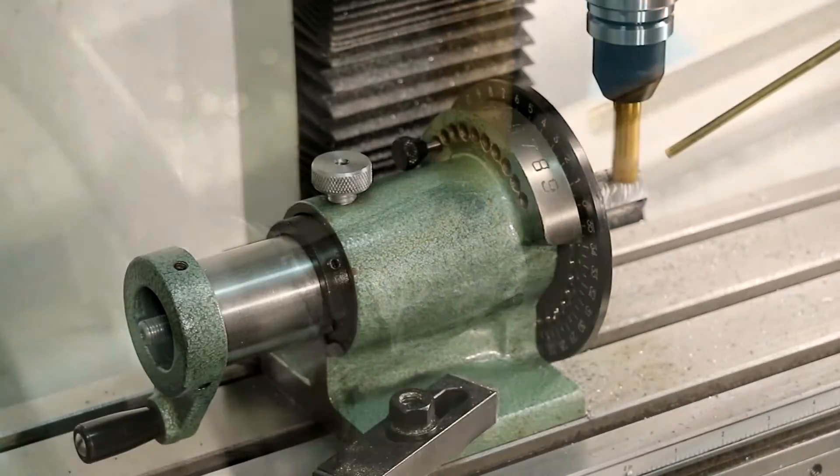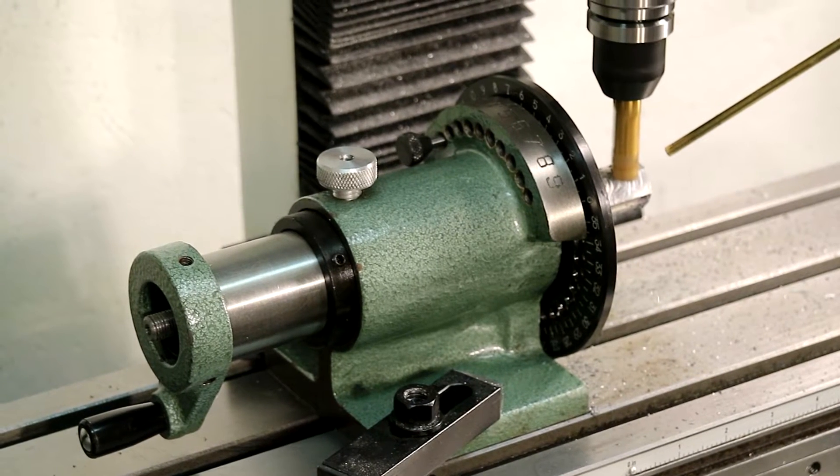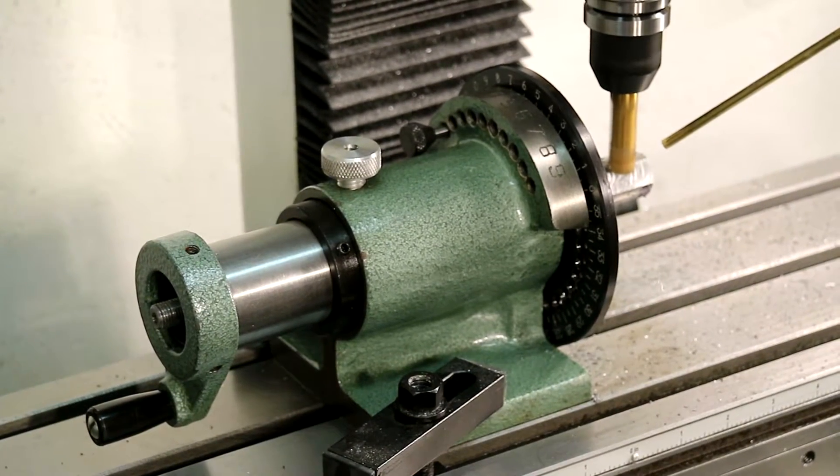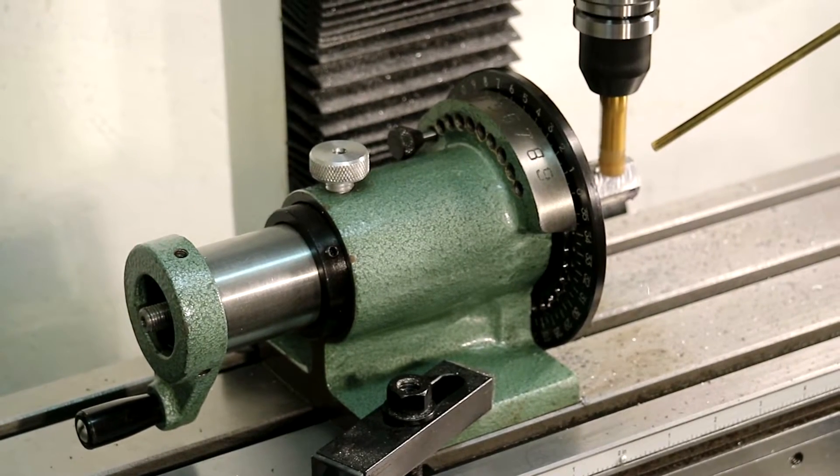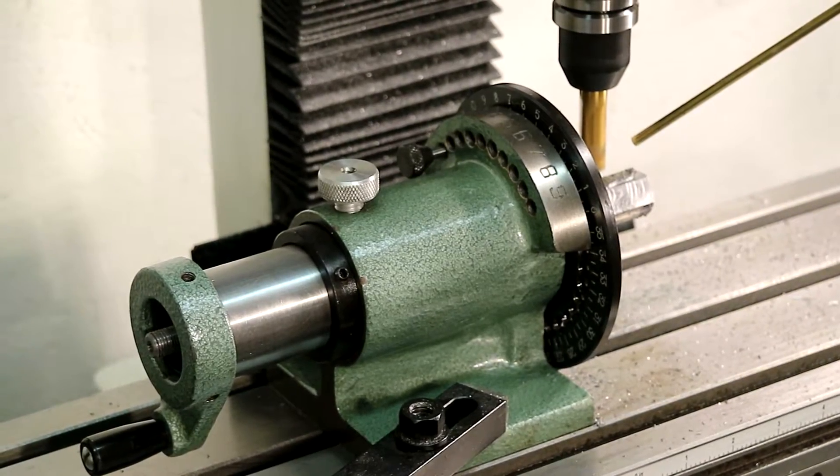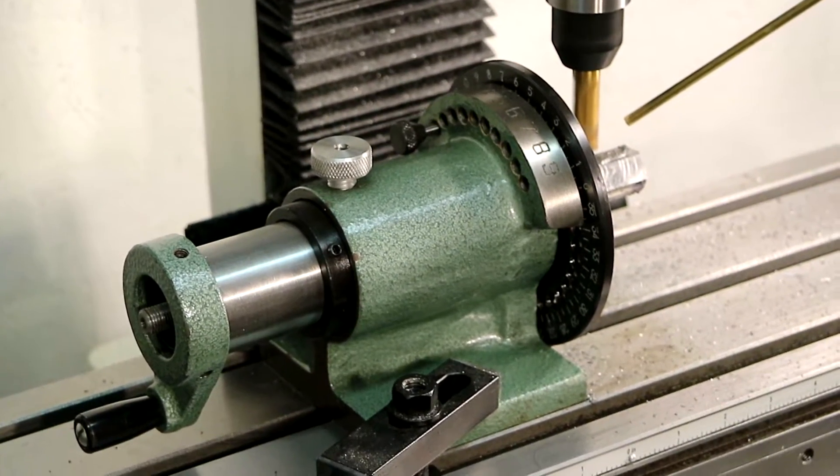The collets used by this indexer are the same 5C collets that I used on the lathe. This indexer has been really handy, and I've used it several times, always for the same purpose, to make flats on shafts. I'm sure that someday I'll make a fourth axis for the mill, but for the time being, this collet indexer is doing everything that I need it to.